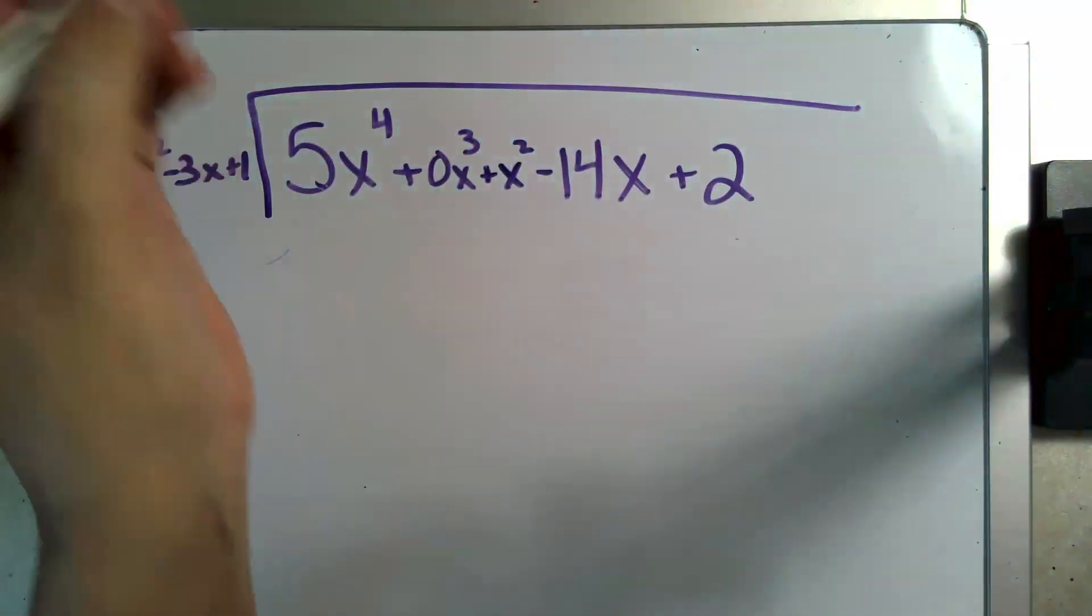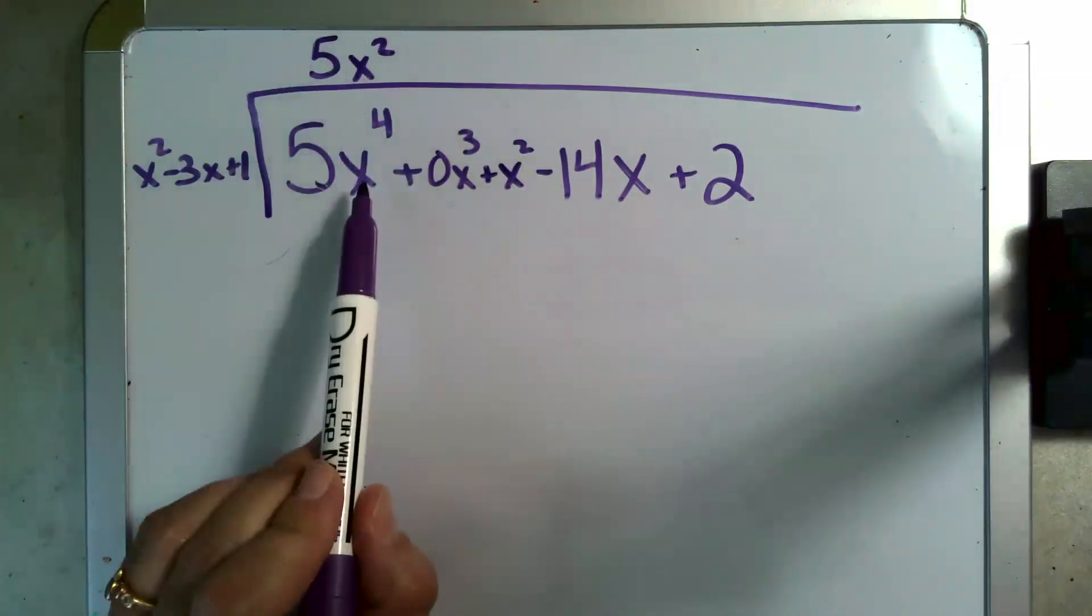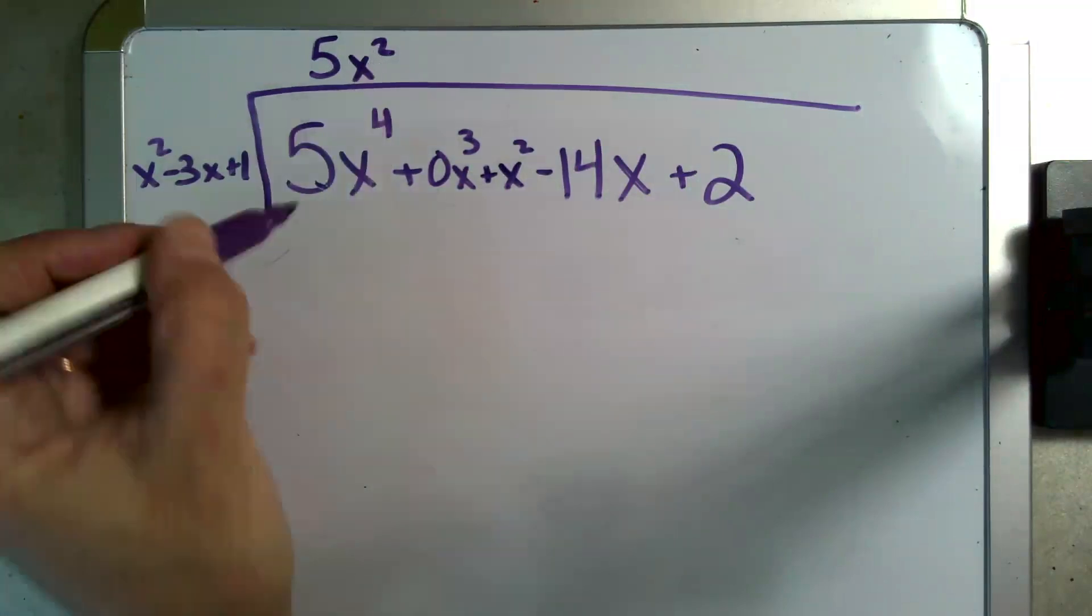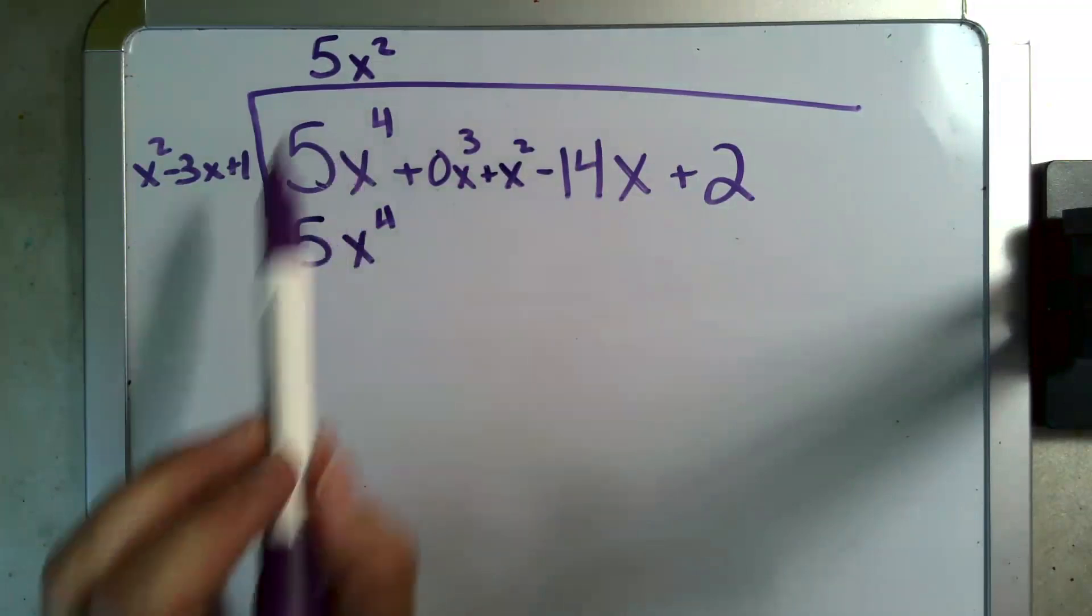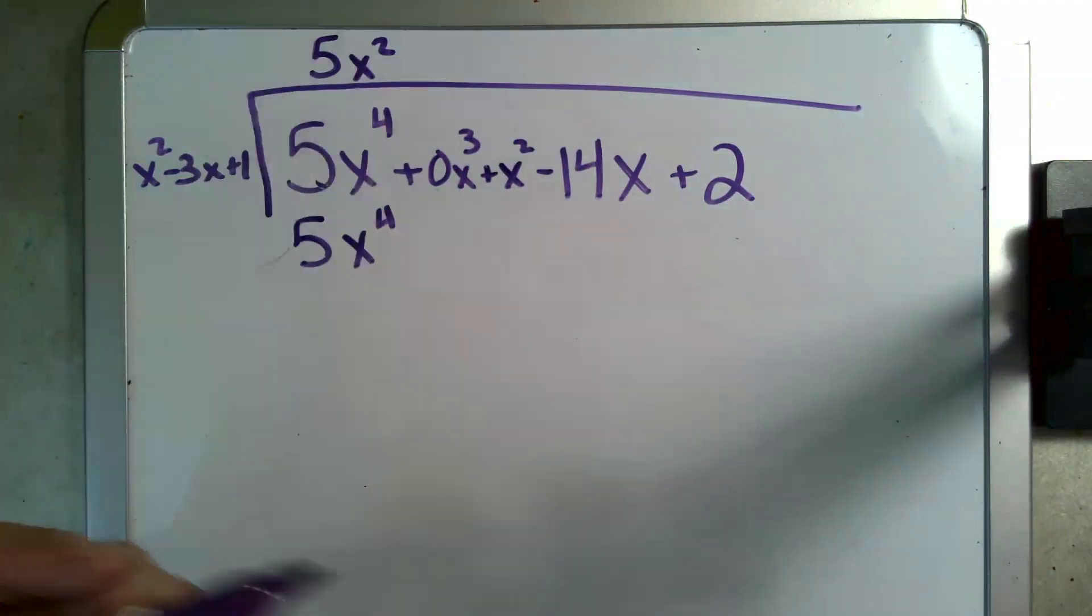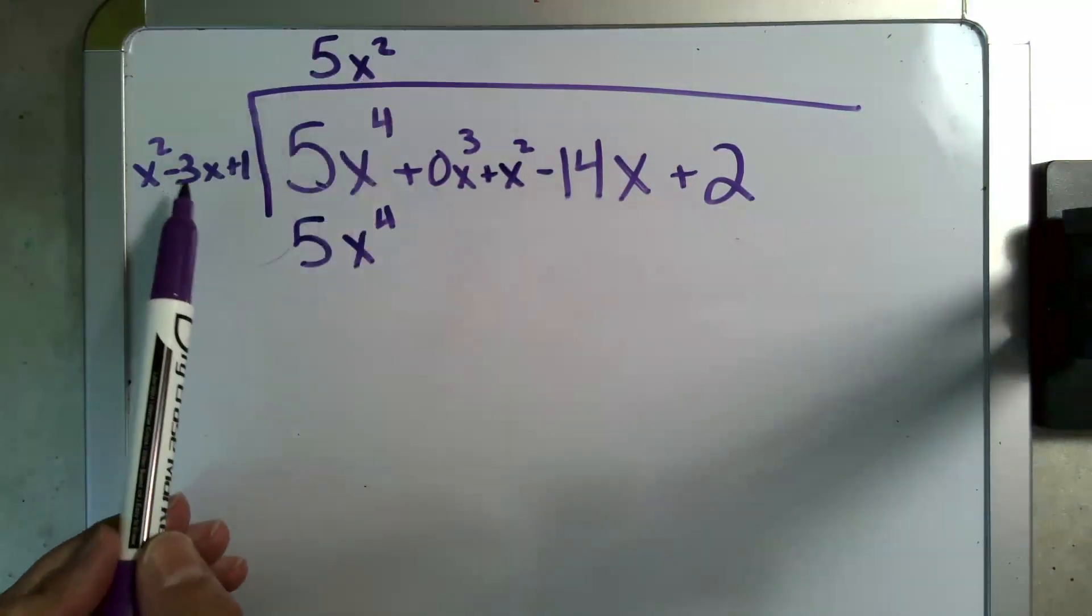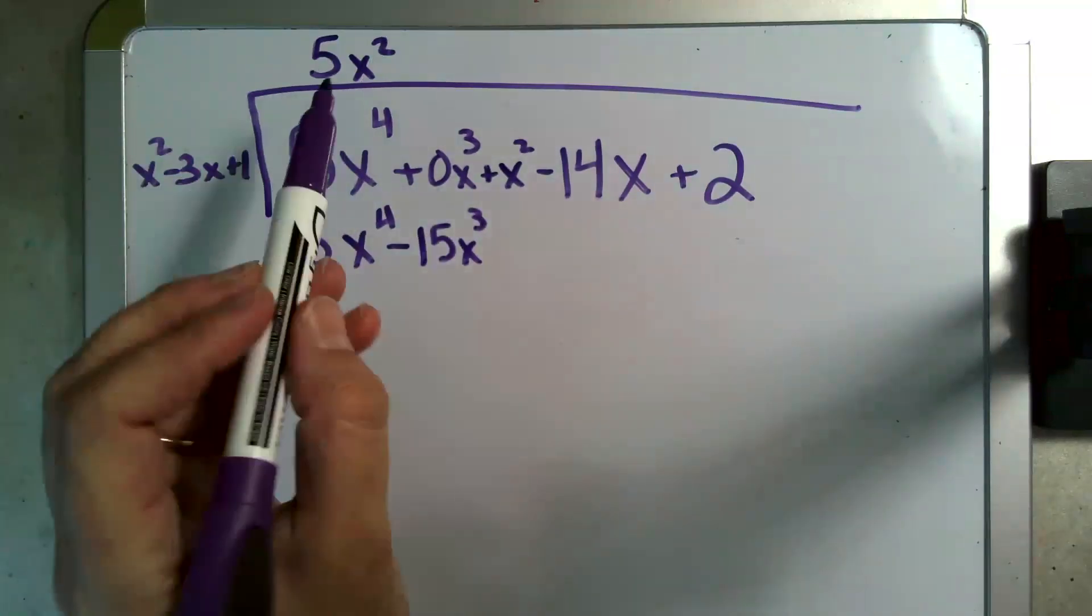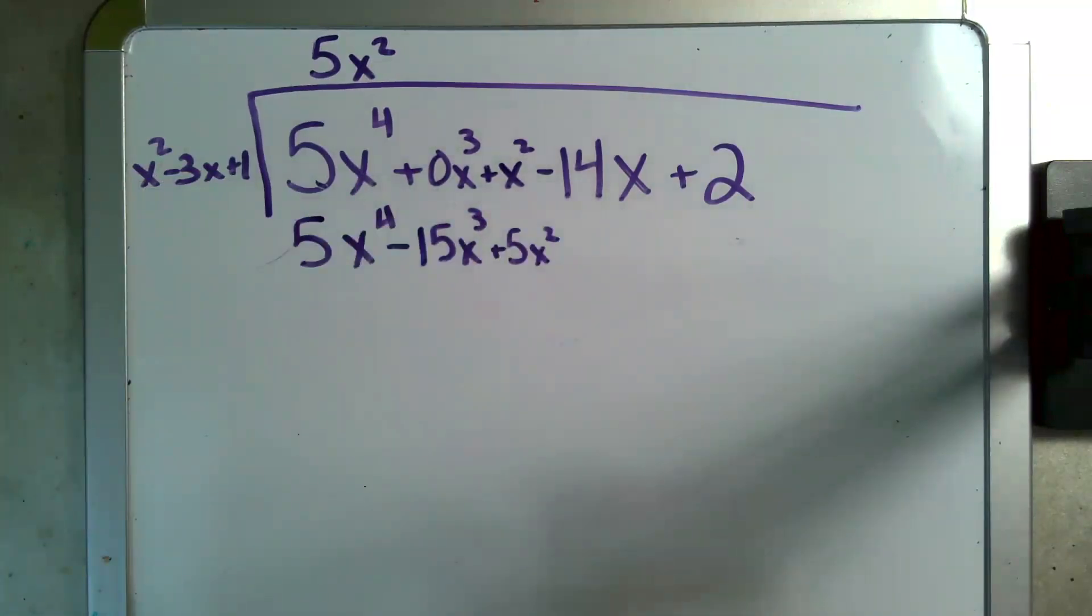So the answer to my question is I need to multiply 5x squared to x squared and I'm going to go ahead and do that right now. So 5x squared times x squared gets me 5x to the fourth. Now if those aren't exactly the same you didn't do it right. But we did do it right. So now we're going to continue multiplying. 5x squared times negative 3x gets me negative 15x to the third and 5x squared times positive 1 gets me 5x squared.